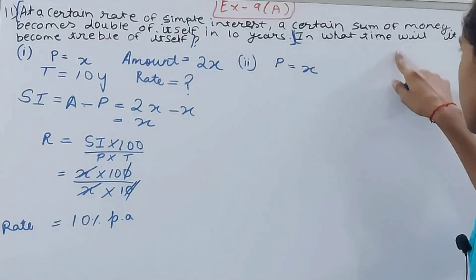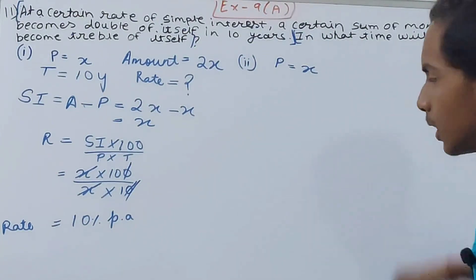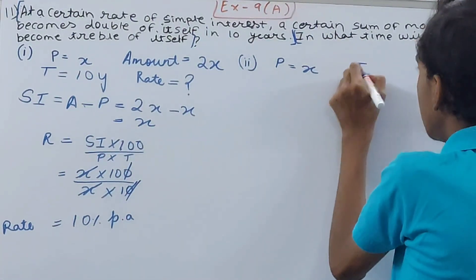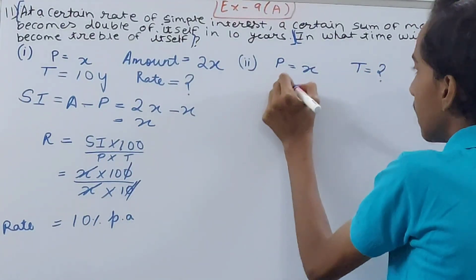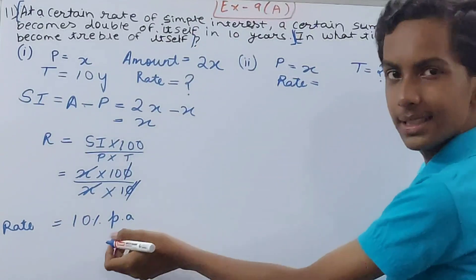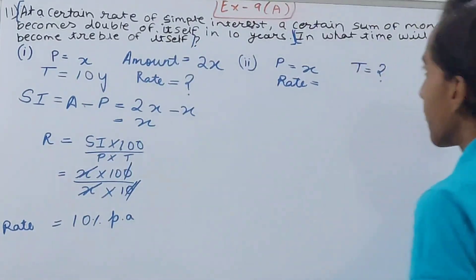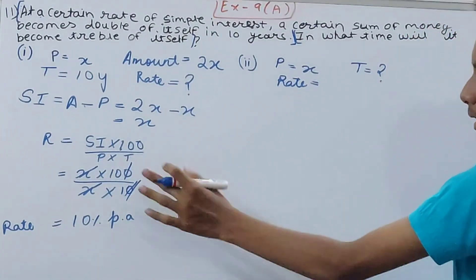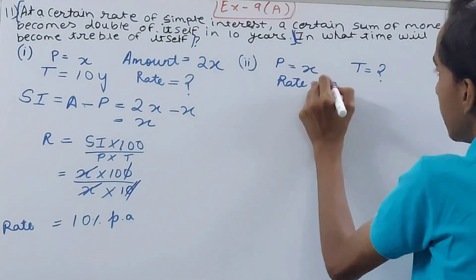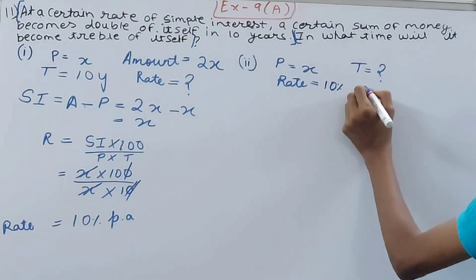What next? It is saying that in what time, so time is not given to us, right? So we have to calculate the time. And rate, rate we already have calculated, the same rate will be there because the sum is also the same, right? And the rate will also be the same, that will be 10 percent.